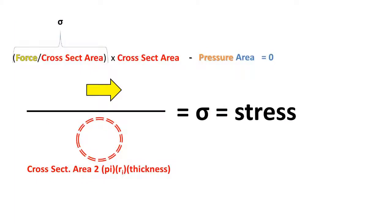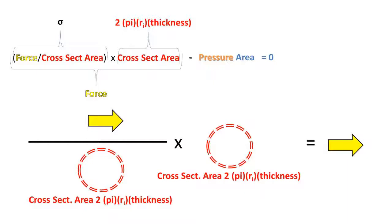We know that stress is force over the cross-sectional area of the material that makes up the tank. If we multiply stress times the cross-sectional area of the material, we get the force acting perpendicular to the cross-sectional plane.